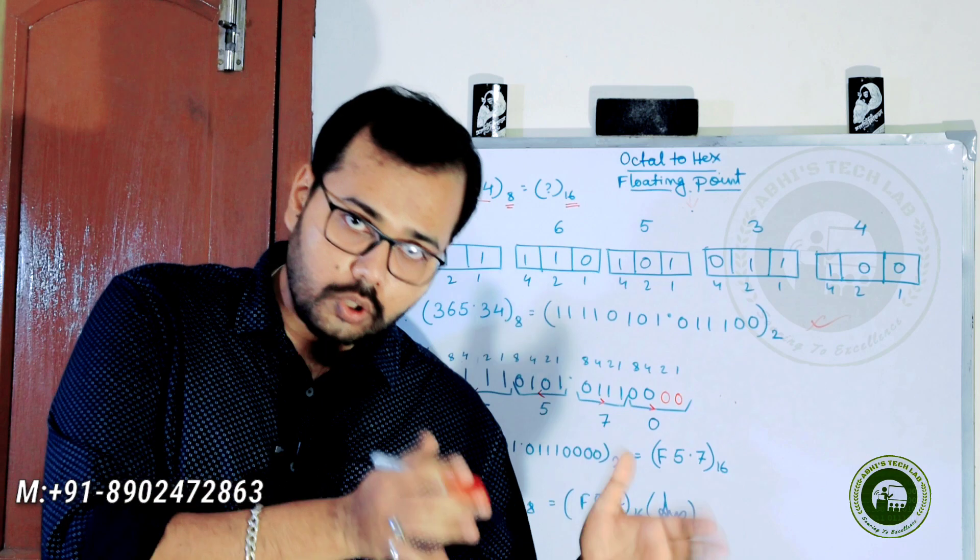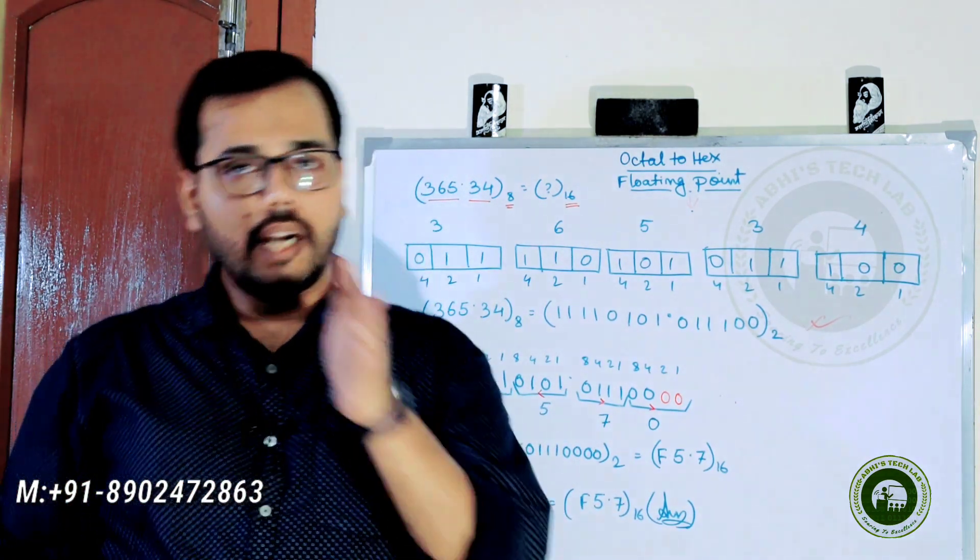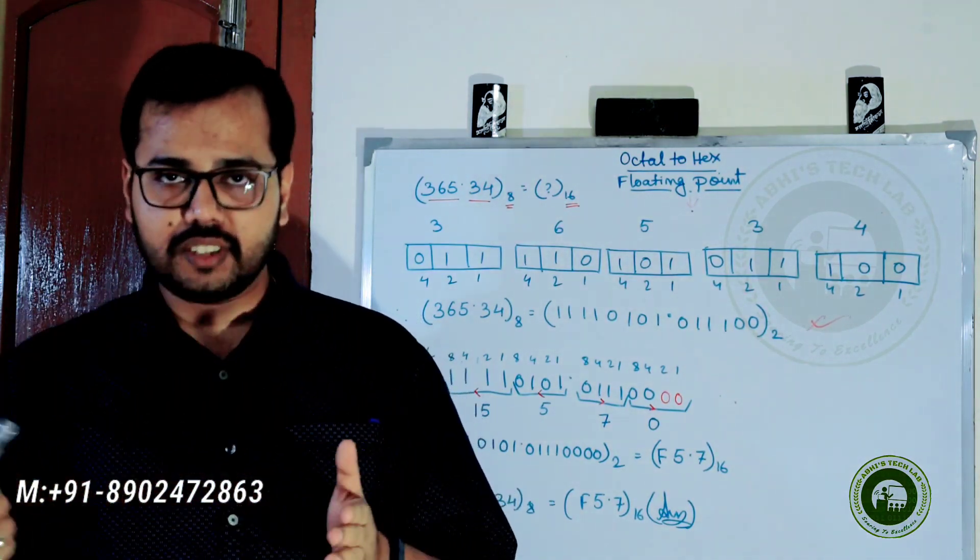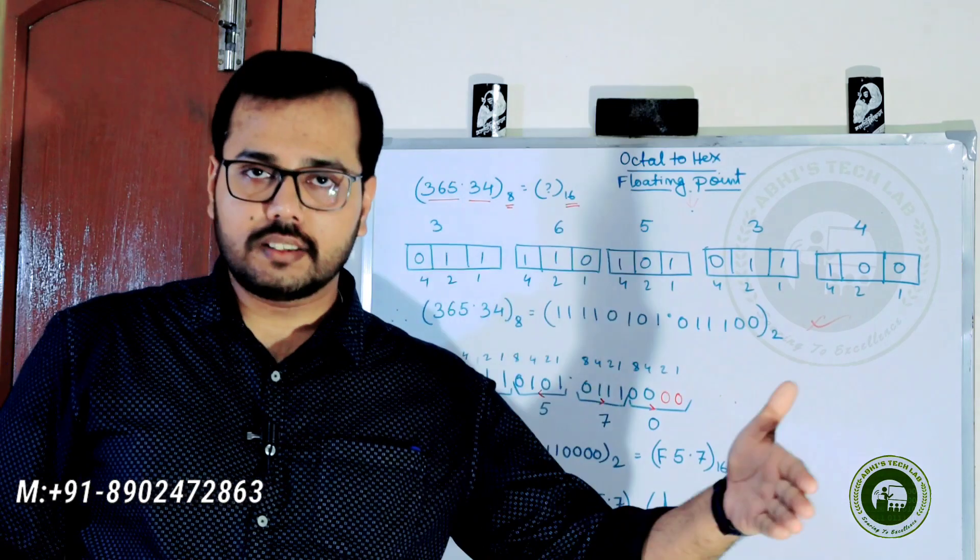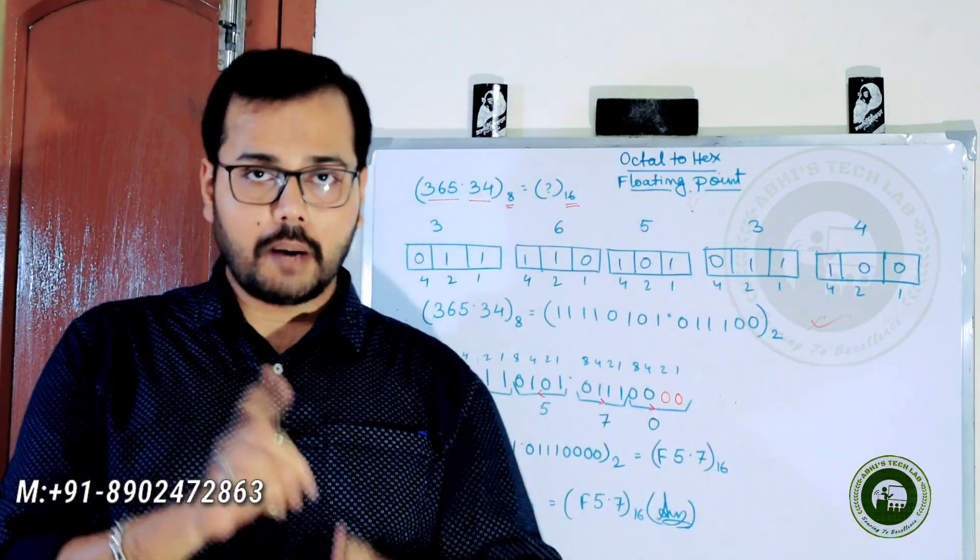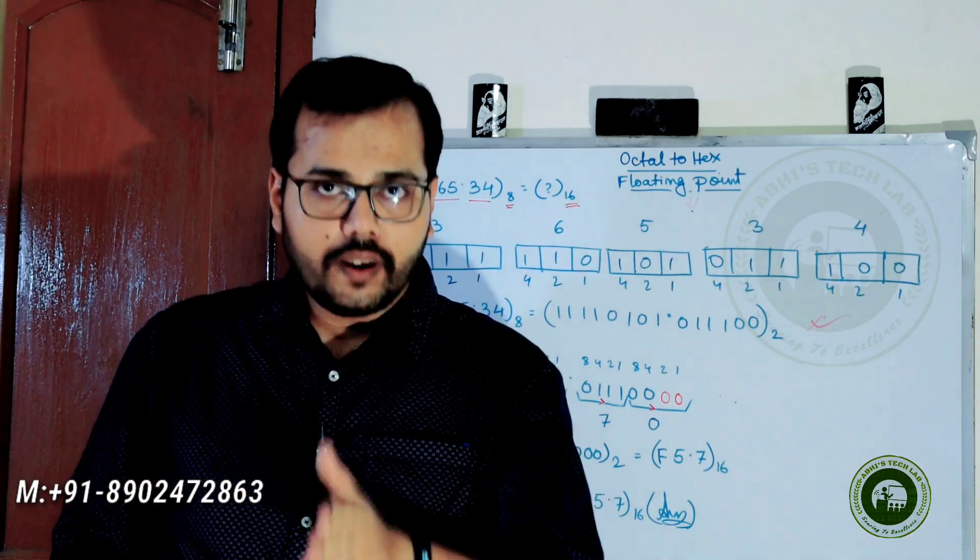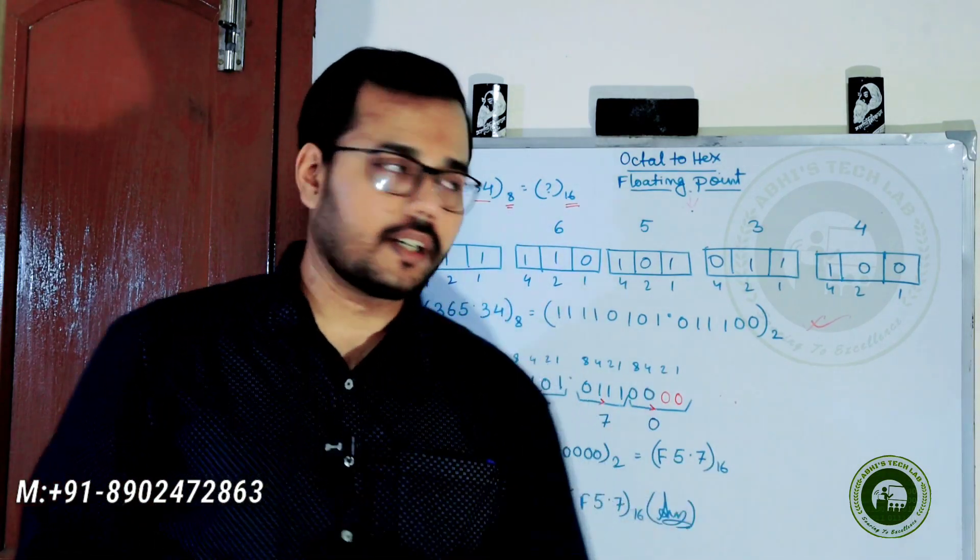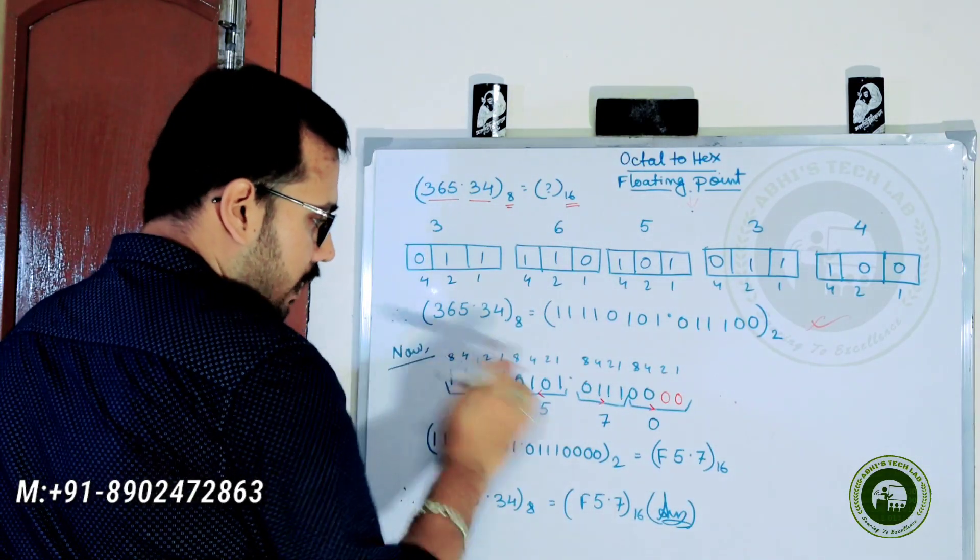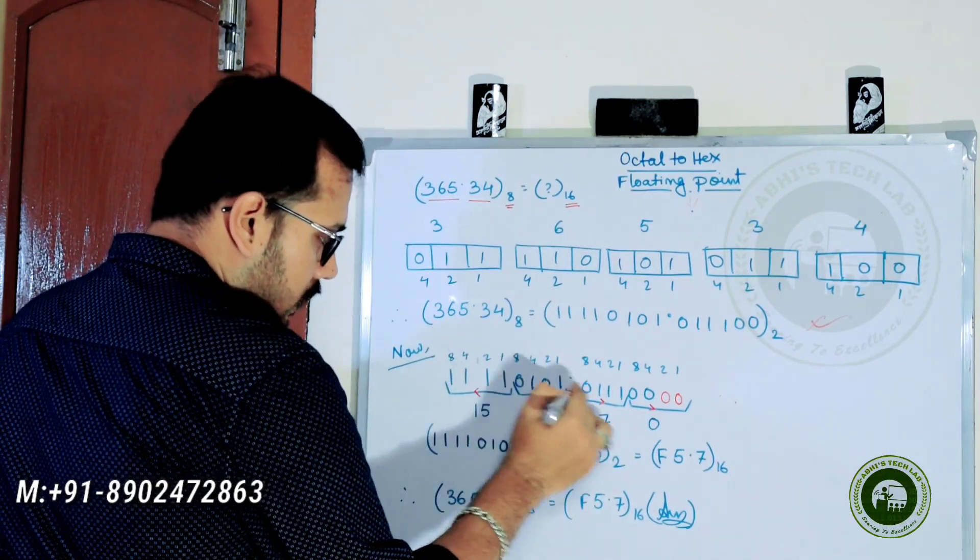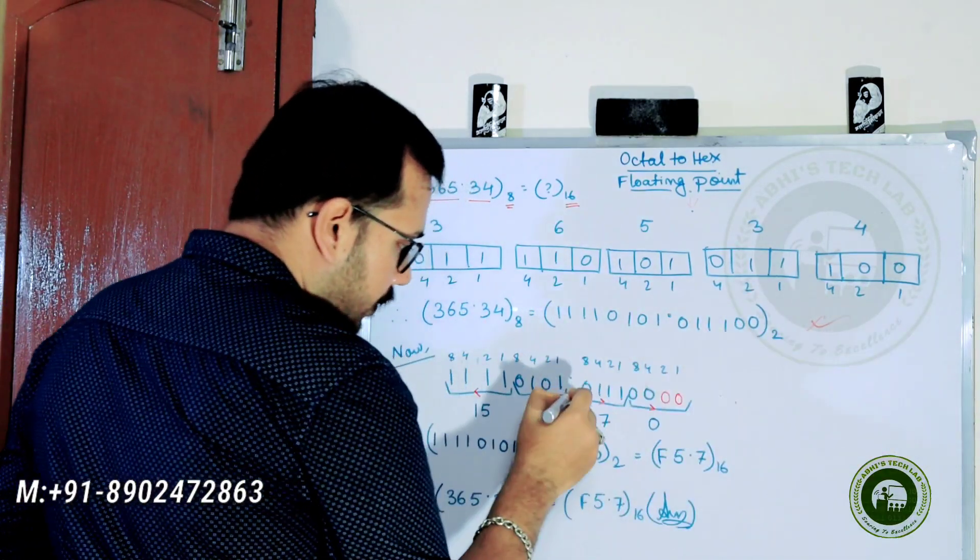Octal 3 to hex 4. Pointer left side is right to left, pointer right side is left to right. Now we have pointer left side right to left, pointer right side left to right.